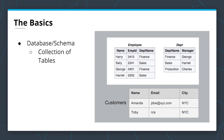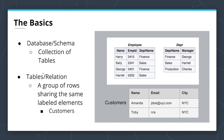Continuing with the basics: a database — or in some database systems, called a schema — is a collection of tables. A table, or relation, is a group of rows sharing the same labeled elements, or columns. Here we have our database and schema as a collection of tables, and our tables or relations as a group of rows sharing the same labeled elements.